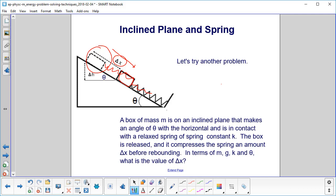In terms of m, g, k, and theta, what is the value of this delta x? How much does it compress the spring before the spring bounces it back?